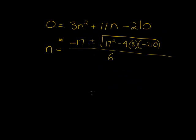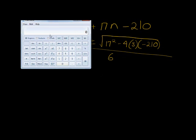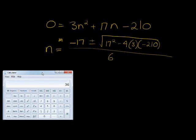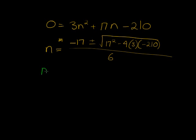Get our calculator out and let's type that in. We have negative 17 plus and then the 17 squared minus 4 times 3 times negative 210. I want the square root of that is 53 and the numerator gives me 36. So that's when I add it. N is equal to 36 over 6 which is just equal to 6.